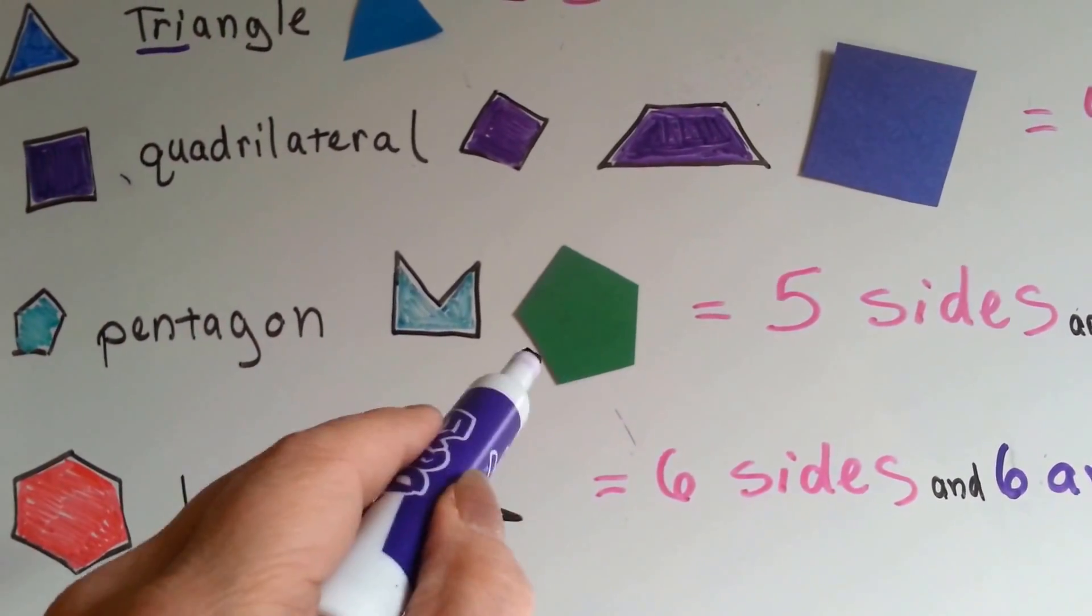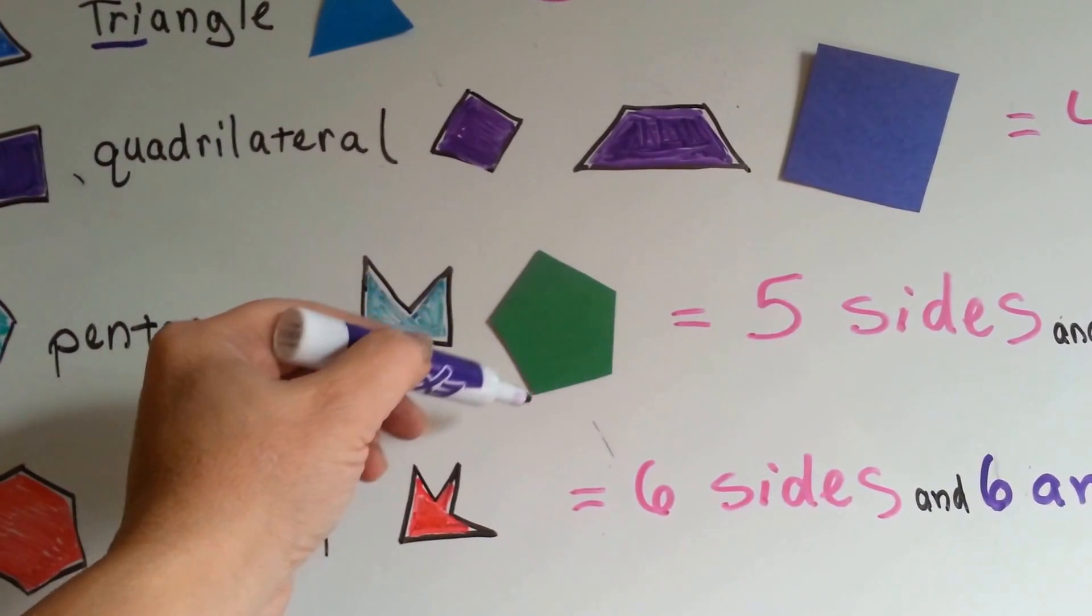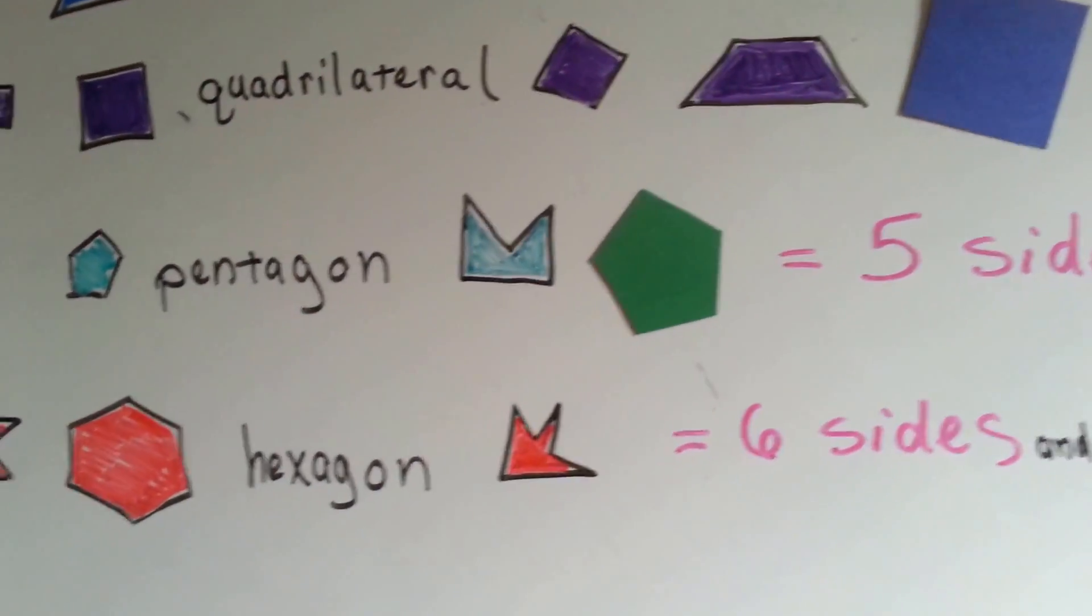One, two, three, four, five. And one, two, three, four, five angles. Five vertices.